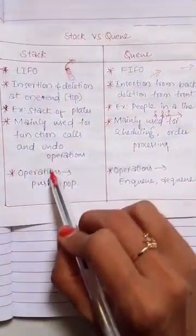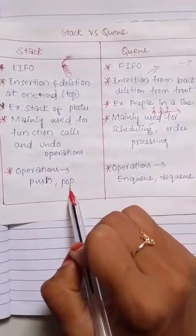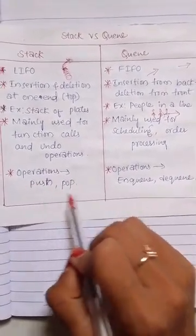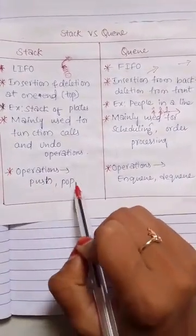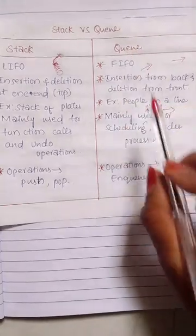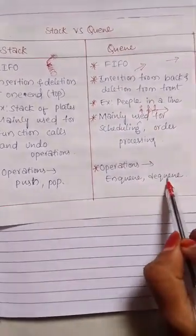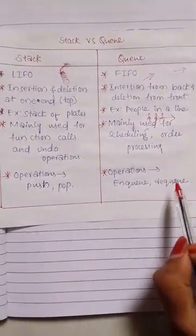In stack, we have two operations: push and pop. These are the operations used in the stack. And in queue, we have enqueue and dequeue.